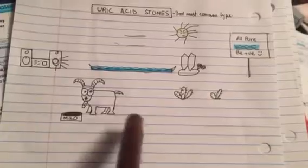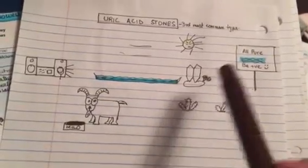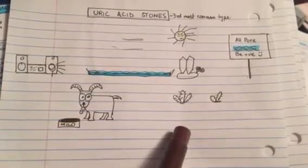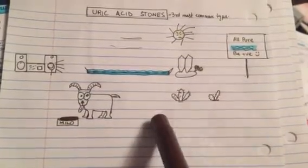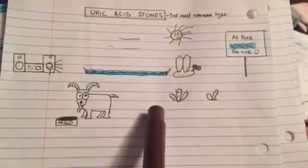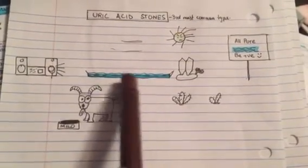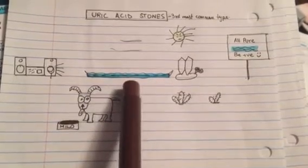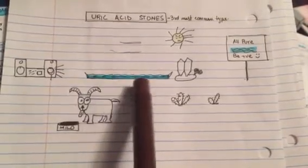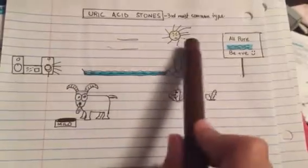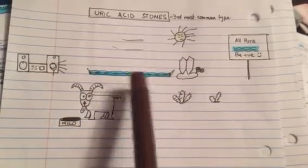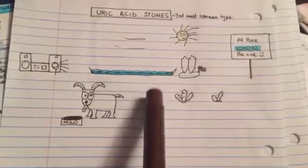In the mnemonic, the cause of uric acid stones — dry arid environment — is shown by a desert scene with a cactus. Decreased urinary volume is shown by a small pool of water, and acidic pH is shown by negative signs in the water. So the causes are dry arid environment, low urinary volume, and acidic pH.